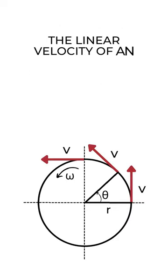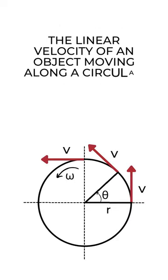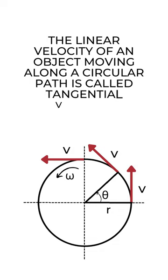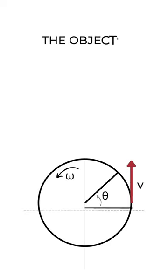The linear velocity of an object moving along a circular path is called tangential velocity. The farther the object is from the center of the circle, the greater the distance it travels in one complete rotation.